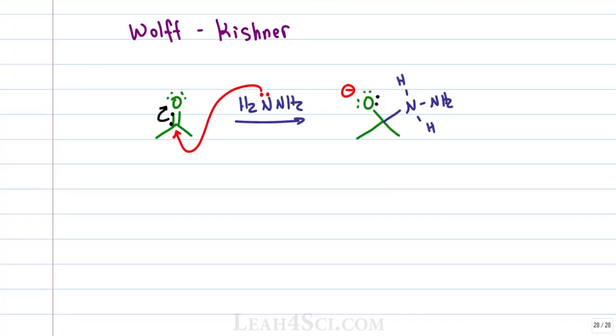Nitrogen now has four bonds and no lone pairs for a formal charge of plus one. At this point you can show the intermediate interacting with a solution to grab and donate a proton or you can simply show an internal proton transfer where the negative oxygen reaches for a hydrogen on the positive nitrogen giving nitrogen back its electrons.